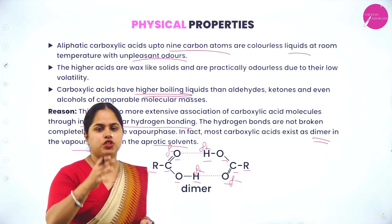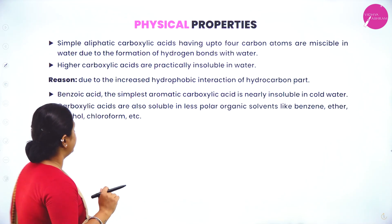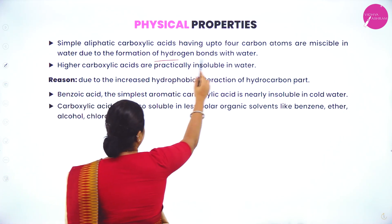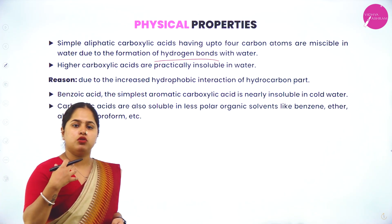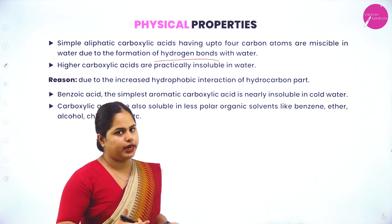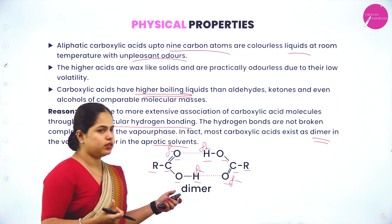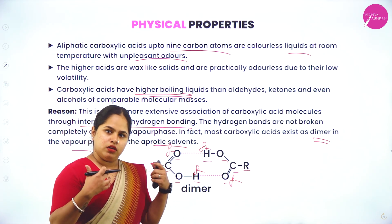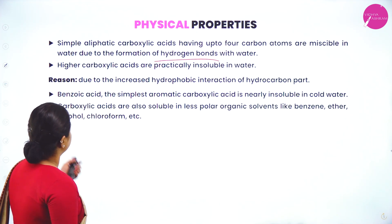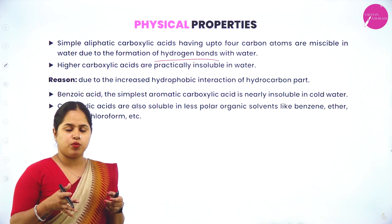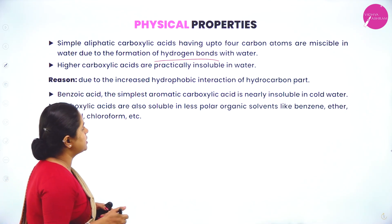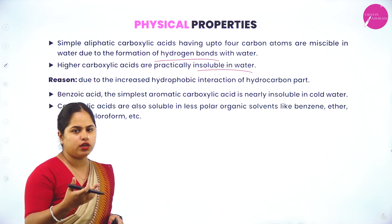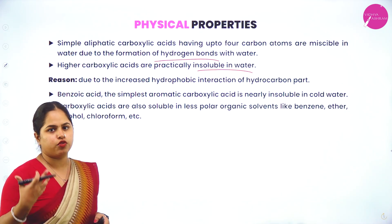Carboxylic acids are the ones having the highest boiling point. Simple aliphatic carboxylic acids having up to four carbon atoms are miscible in water due to the formation of hydrogen bonds. They are able to form hydrogen bonds with water molecules, which is why they are generally soluble. However, carboxylic acids with more carbon atoms are practically insoluble in water because the alkyl or aryl group is hydrophobic in nature — increased hydrophobic interaction of the hydrocarbon part makes them less soluble.